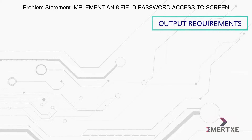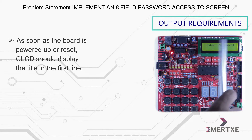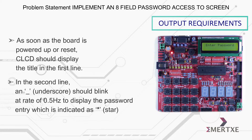As soon as the board is powered up or reset, the CLCD should display the title in the first line. In the second line, an underscore should blink at the rate of 0.5 Hz to display the password entry, which is indicated as a star.